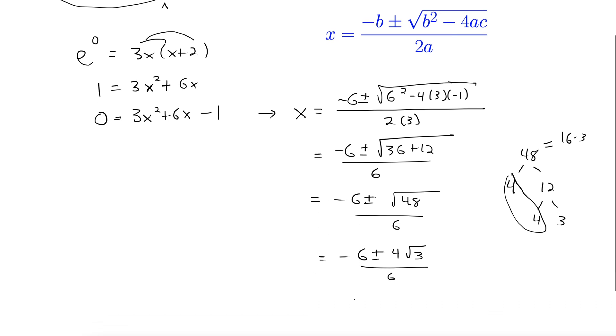Now we're ready to simplify. I'll break this up into 2. So negative 6 over 6 plus or minus 4 over 6 rad 3. Final simplification: negative 1 plus or minus 2 rad 3 over 3. Now, one last thing.